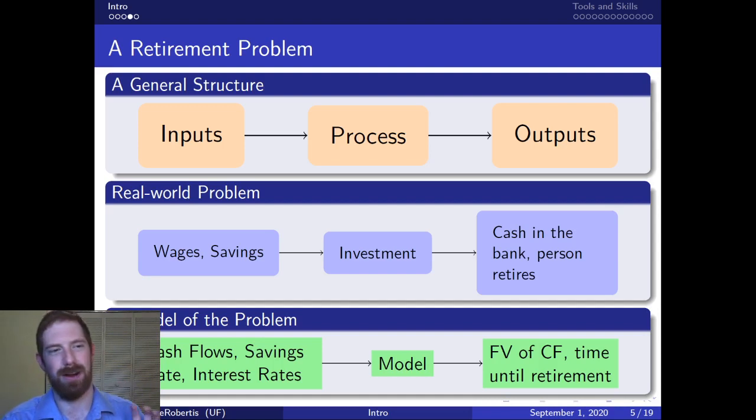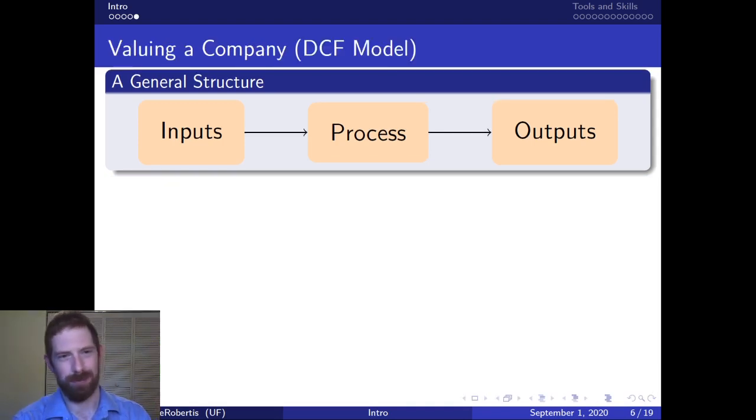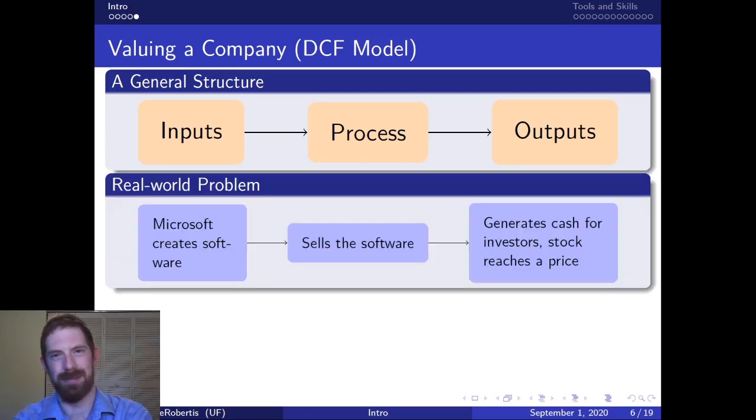So the model is all about approximating some real world process and here is a relatively simple real world process. But the same thing can be applied to more complicated situations. Definitely more complicated is thinking about how to value a company especially like a large multinational corporation with all these different business segments. Certainly it is complex to come up with a relatively accurate valuation for that company.